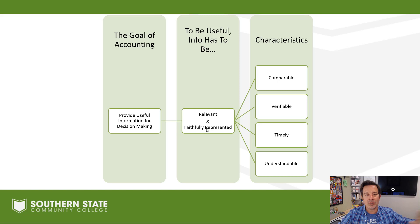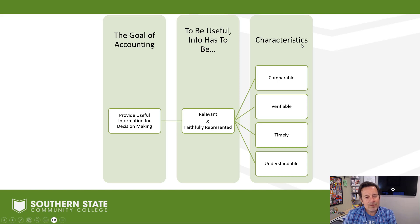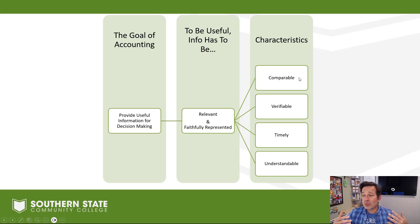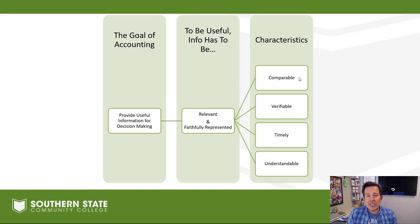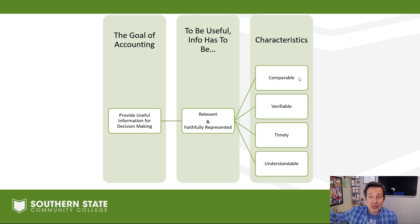Some characteristics of relevant and faithfully represented information: first of all, it's comparable. I can compare Apple to Google, to Amazon, to other companies, and I can also compare Apple from year to year — looking at last year, the year before, and the year before that — to see what the trends are and how Apple's doing over the past three, four, or five years. Comparable information between companies and between years is relevant information.